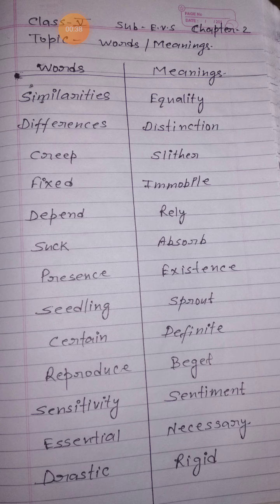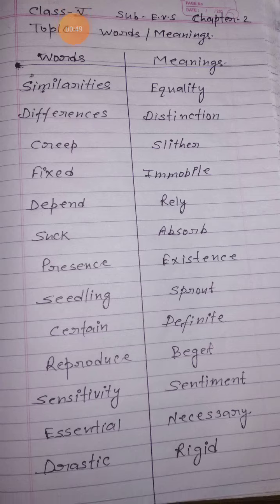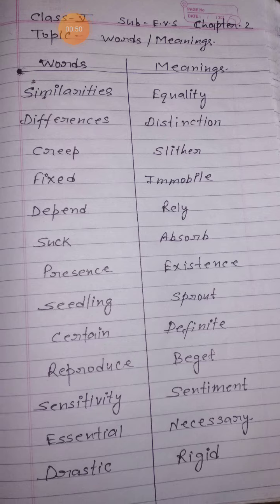Creep means slither — rengna. Fixed means immobile — jo kuch fix rehena chahiye, that is still. Depend means rely — nirvar rehena. Suck means absorb — kisi cheez ko choosna. That is suck.